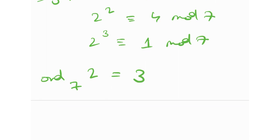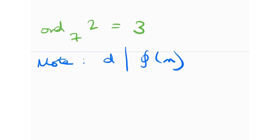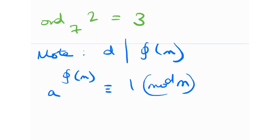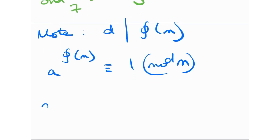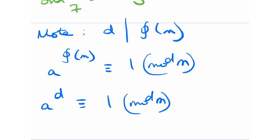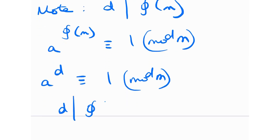Note: d actually divides phi(m). Why? From Euler's Totient theorem, a^(phi(m)) ≡ 1 (mod m). From the definition of order, a^d ≡ 1 (mod m). In both congruences the only difference is the exponent of a, and since d is the smallest such integer, phi(m) must be a multiple of d — or in other words, d divides phi(m).